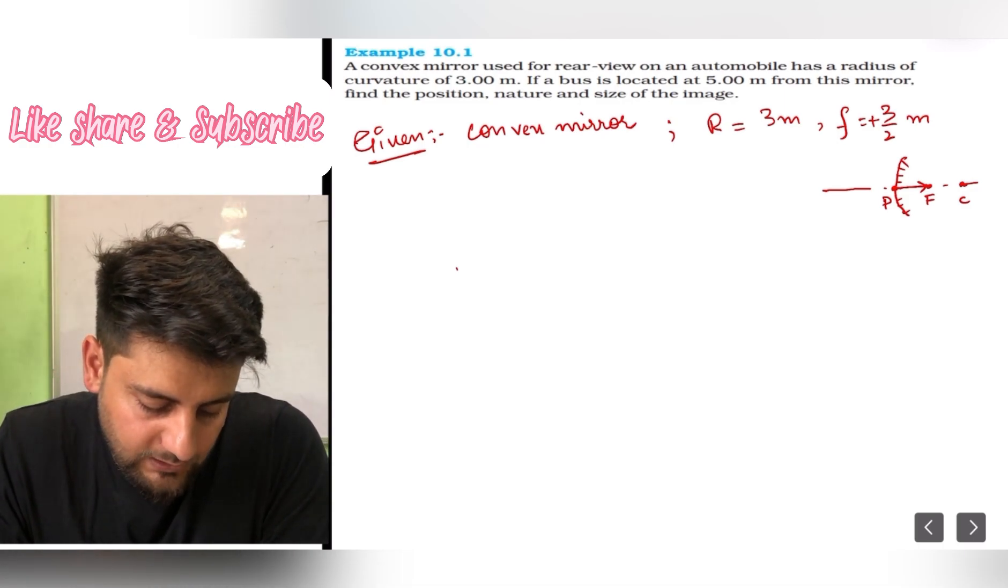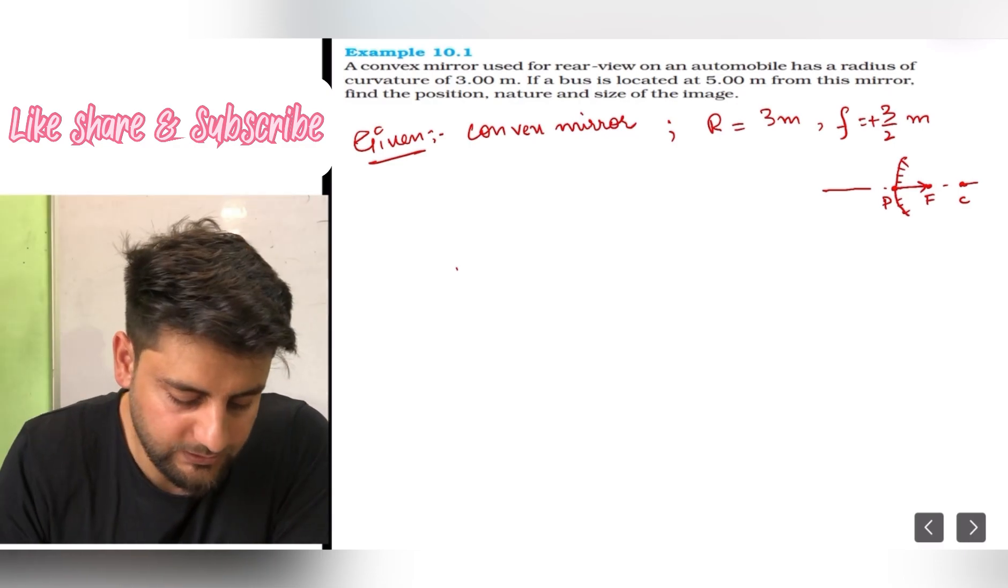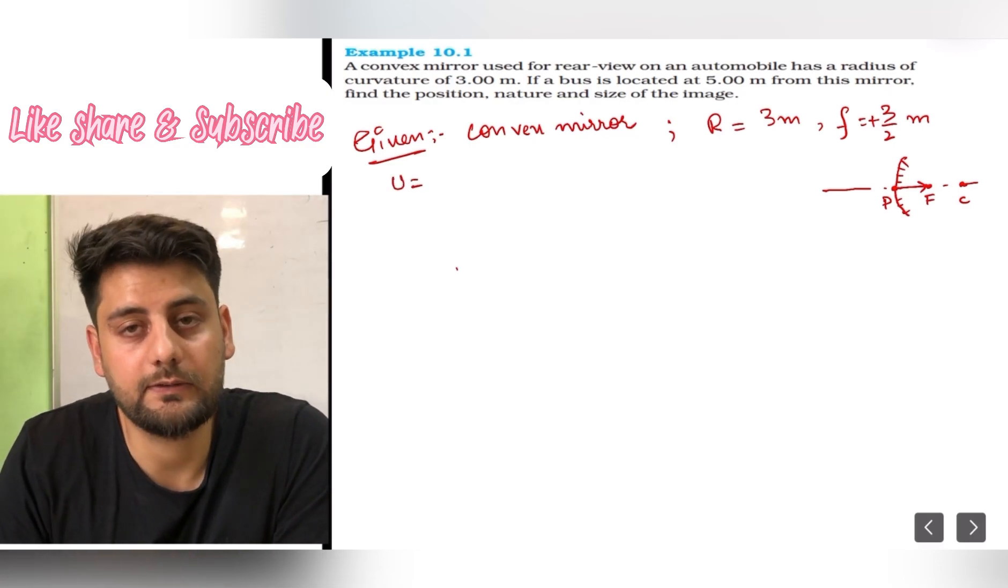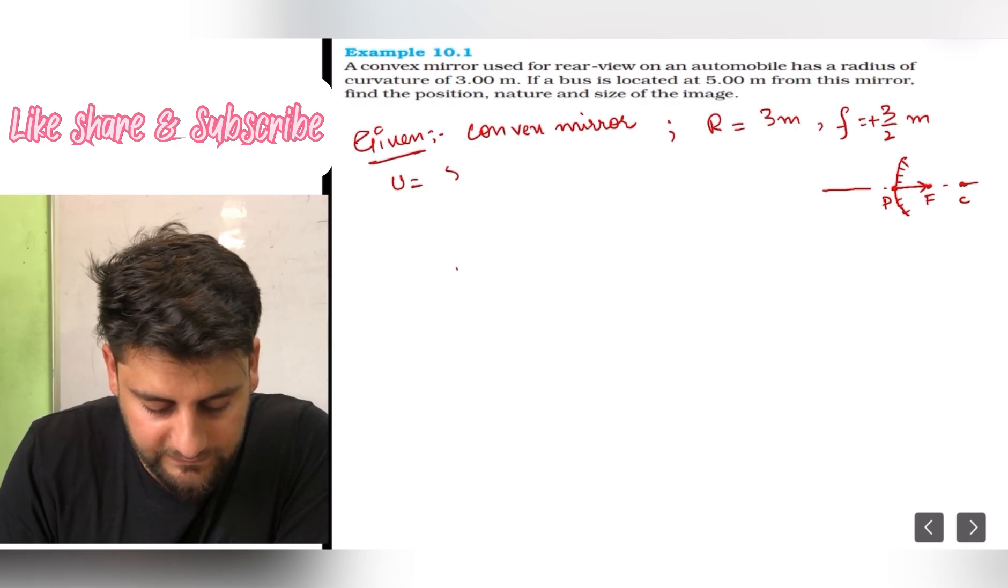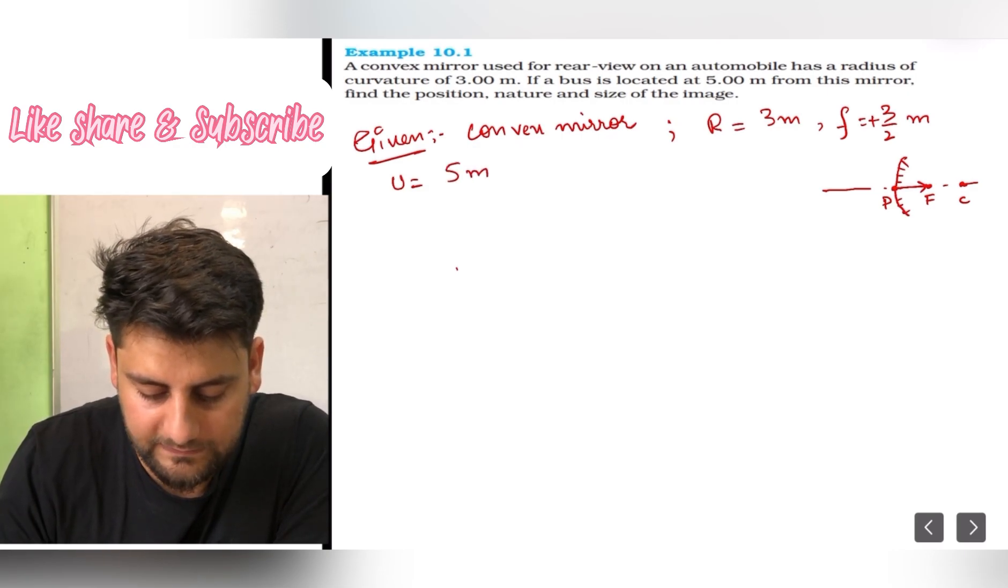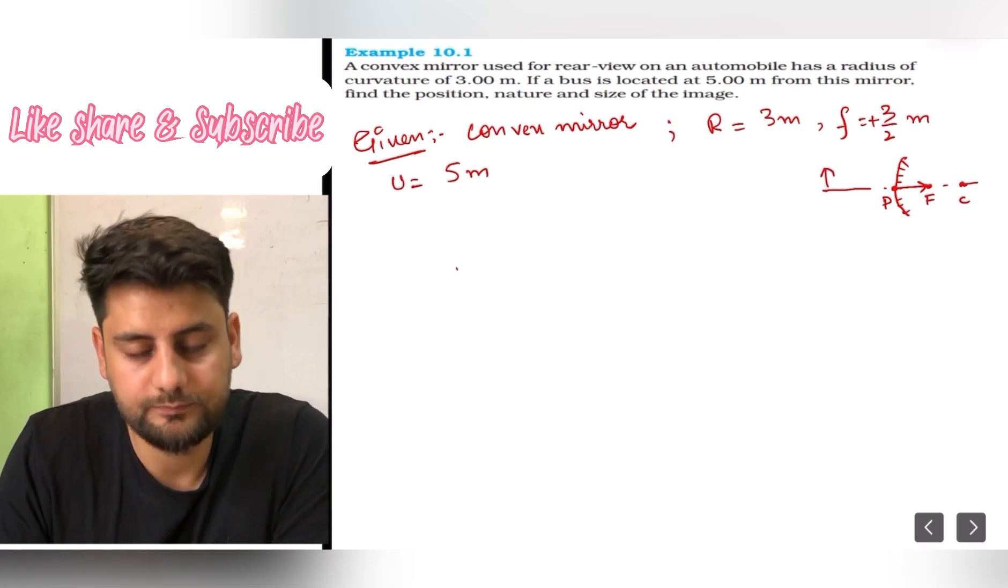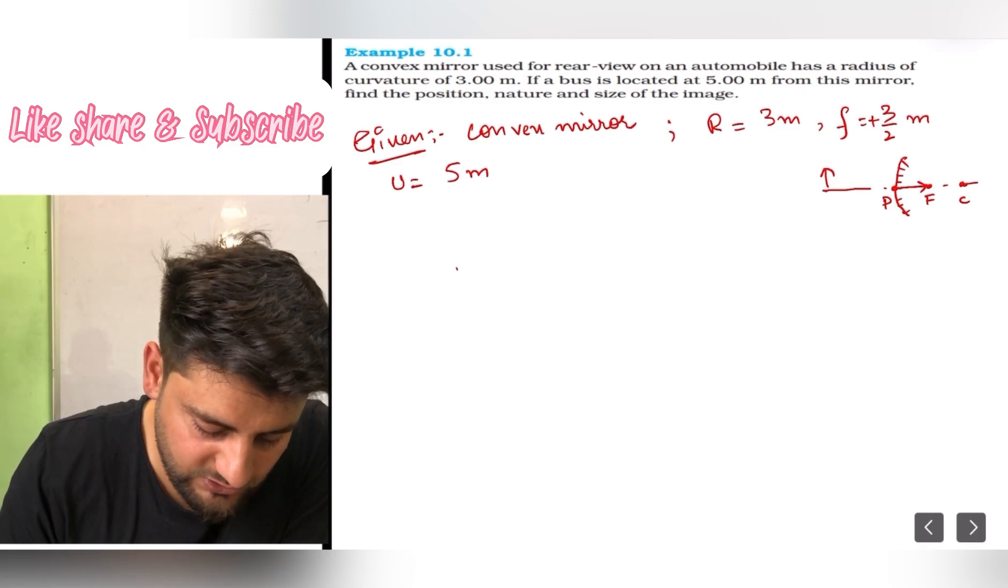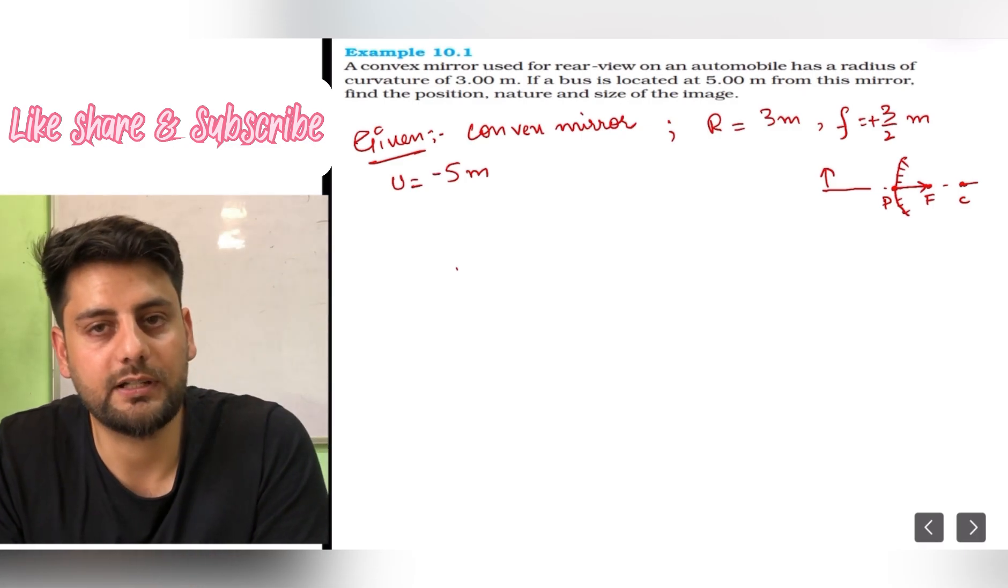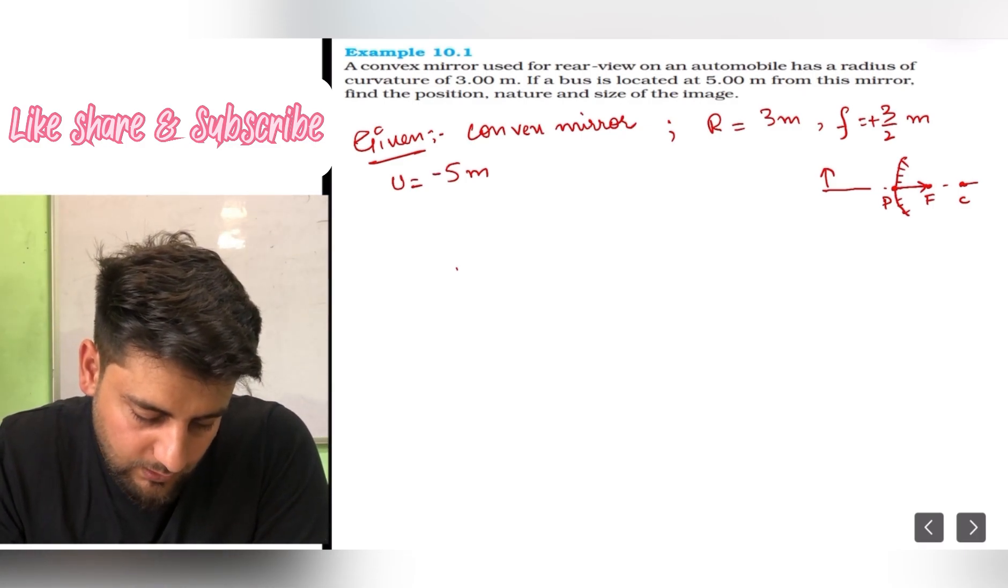Now it says if a bus is located at 5 meter, so that is u, the object distance. Object distance is u, so it is 5 meters. Is it positive or negative? We always place object in front of the mirror, so left side, negative x axis. So I have to take negative sign.